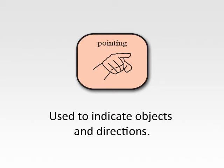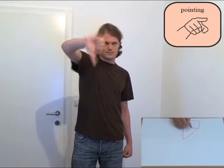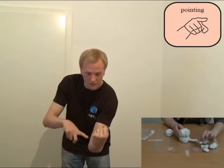We split the gesture's usage into five major classes. Pointing is used to indicate objects and directions. This may be accomplished using index finger or thumb, and can also include body references.